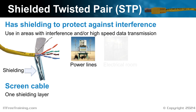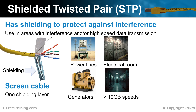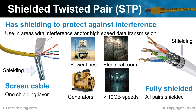Since STP cables offer enhanced protection against interference, they are often used in areas where there is a lot of electromagnetic interference or areas requiring high-speed data transmission — for example, areas with power lines, electrical rooms, near generators, or for data transmission over 10 Gbps. Since the cables are shielded, they have higher reliability than unshielded twisted pair cables, which is why they are more reliable at higher speeds. The basic STP cable has one layer of shielding, but you can also get fully shielded STP where there is additional shielding around each individual pair of wires. STP cables cost more than UTP cables and are also less flexible, making them harder to work with.